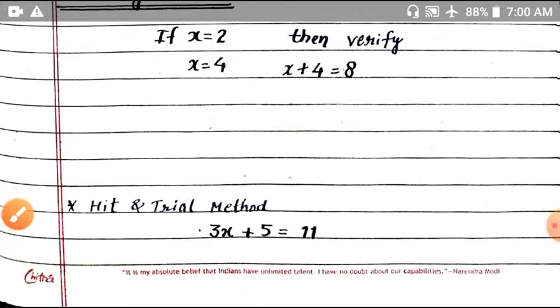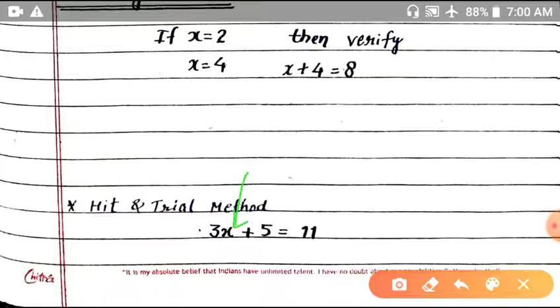Let's move to a new topic: Hit and Trial Method. Hit and Trial Method is similar to putting values, but there is a difference. In putting values, numbers are given to verify. But in Hit and Trial Method, you find the value yourself by trying different numbers. Here our equation is 3x plus 5 equal to 11.